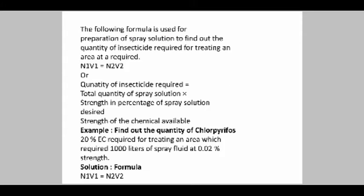For the preparation of a spray solution, some quantity of insecticide is required. We use the chemical formula N1V1 = N2V2. Here, N1 is the strength of the chemical, V1 is the quantity of insecticide, N2 is the strength of the spray solution desired in percentage, and V2 is the total quantity of spray solution required.